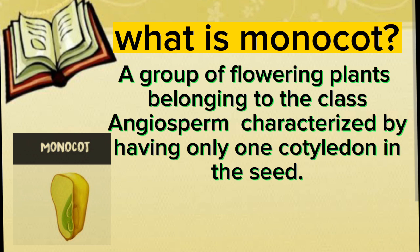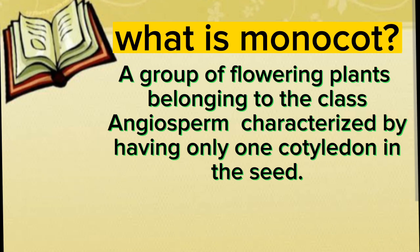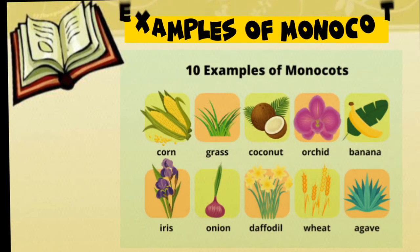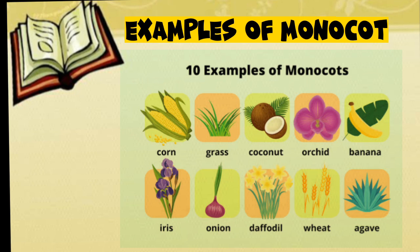Monocot is characterized by having only one cotyledon in the seed. These are the examples of monocot — as you can see in this picture: corn, grass, coconut, orchid, banana, iris, onion, daffodil, wheat, and agave.